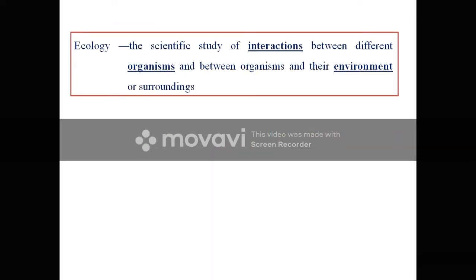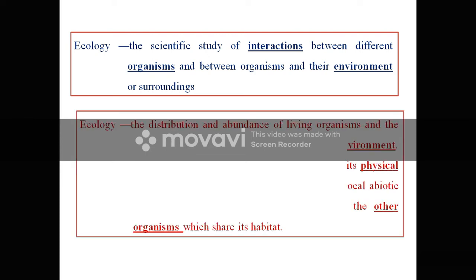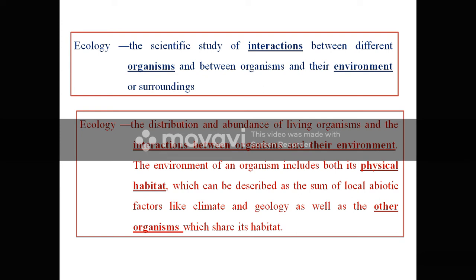Biotic factors means living factors and abiotic factors means non-living factors. We are going to study two more important definitions of Ecology. The scientific study of interactions between different organisms and between organisms and their environment or their surroundings is called Ecology. Ecology is also defined as the distribution and abundance of living organisms and the interaction between organisms and their environment, including both physical habitat described as the sum of local abiotic factors like climate and geology, as well as biotic factors of that habitat.